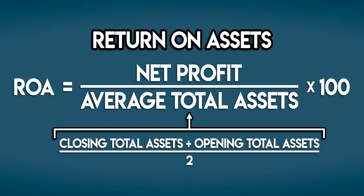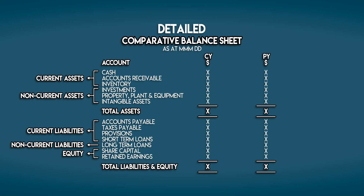Total assets live in the balance sheet — another financial statement that gives us a snapshot of a business's assets, liabilities, and equity at a single point in time. This is a comparative balance sheet because we have two columns: one for the current year and one for the previous year. The numbers we're looking for are closing total assets at the end of the current year and opening total assets, which are the same as last year's closing total assets.